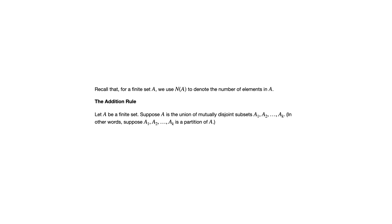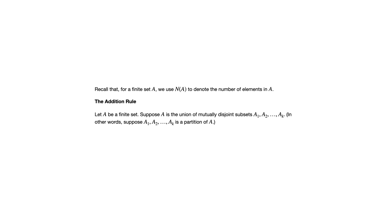The addition rule says if you have a finite set and you can divide it up into disjoint subsets — a partition, a word we used earlier in this course — then the number of elements in set A is going to be the sum of the number of elements from each of those mutually disjoint subsets. For example, if you're talking about guests in a hotel and you partition those into the number on the first floor, second floor, third floor, fourth floor, then the total number of guests is the sum from each floor.